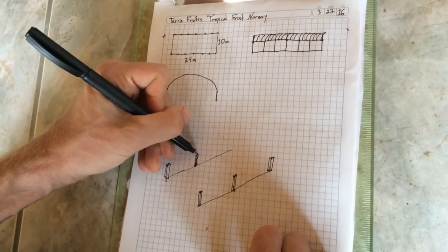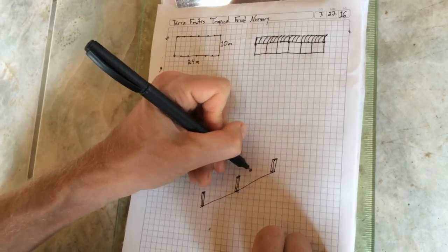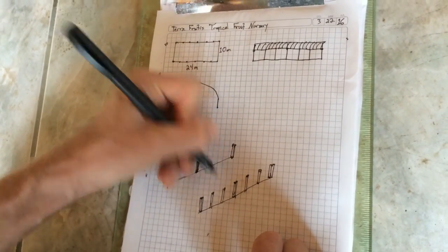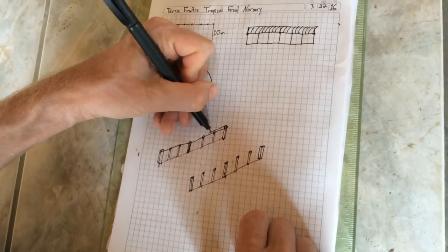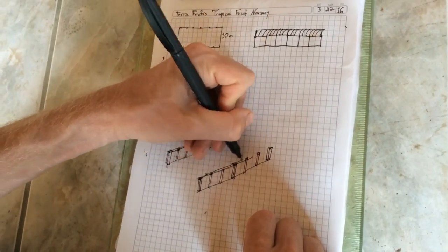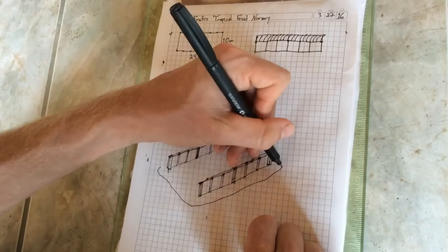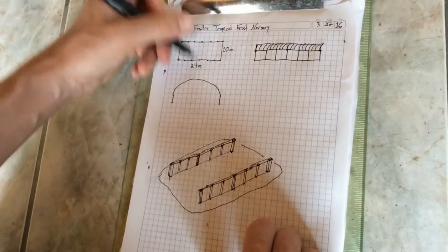This is a nice 3D view. So the corner posts and the middle, we're using structural rectangle steel tubes, which are really strong. And for the two posts in between each of those, we're just using 1 inch galvanized steel tubes. They're not quite as strong, but they're a lot cheaper.